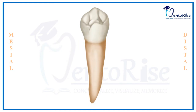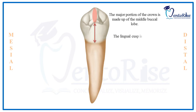Observing the crown from the lingual aspect, the major portion of the crown is made up of the middle buccal lobe, while the lingual cusp is very small. This makes the lingual aspect of the permanent mandibular 1st premolar very similar to that of the permanent mandibular canine.